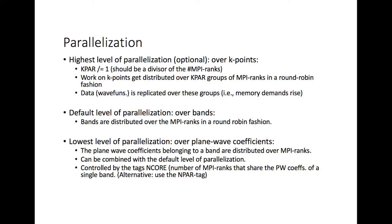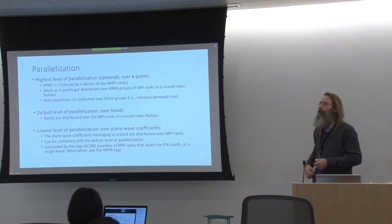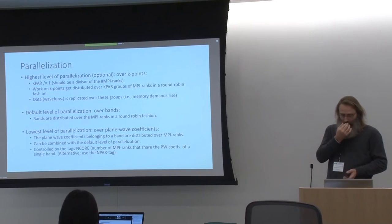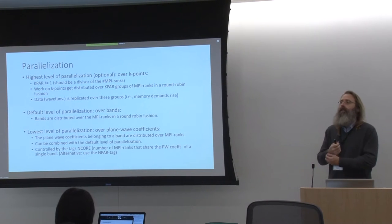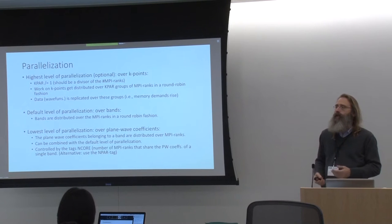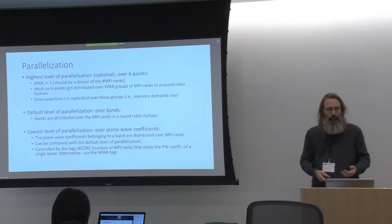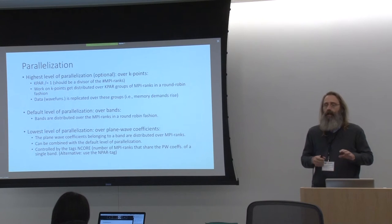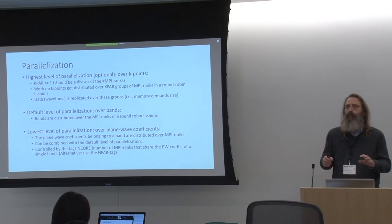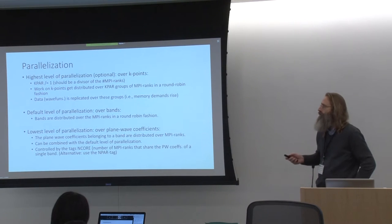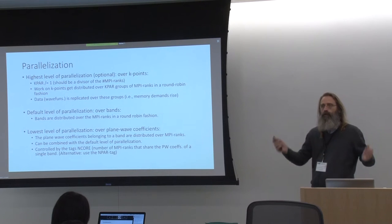If we look at how the work is parallelized and explicitly distributed over these MPI ranks, then at the highest level of parallelization - which is actually an optional level - we distribute over the K points we've been speaking about. Why is this the highest level? Consider that we have eight MPI ranks and want to divide the work. At the highest level, we create out of these eight MPI ranks two groups of four ranks - it's the first division of our total number of MPI ranks.